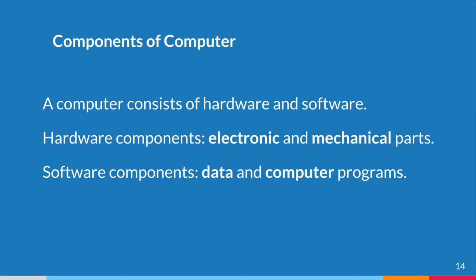A computer system consists of both hardware and information stored on hardware. Information stored on computer hardware is often called software. The hardware components of a computer system are the electronic and mechanical parts. The software components are the data and the computer programs.